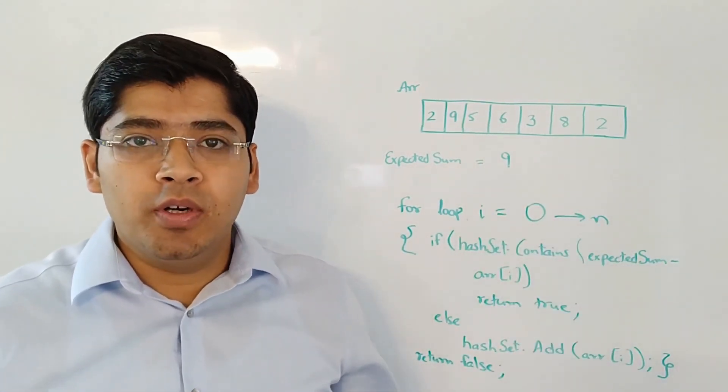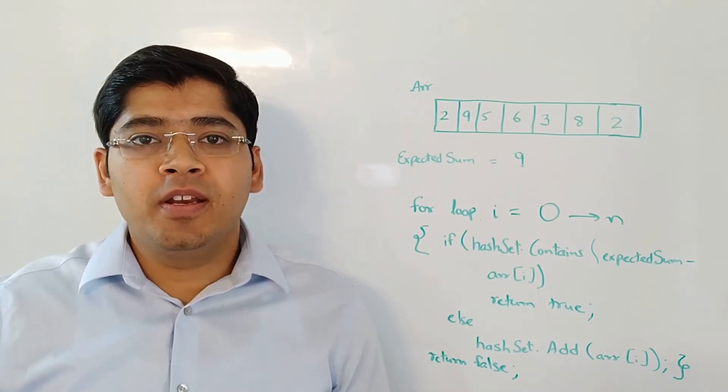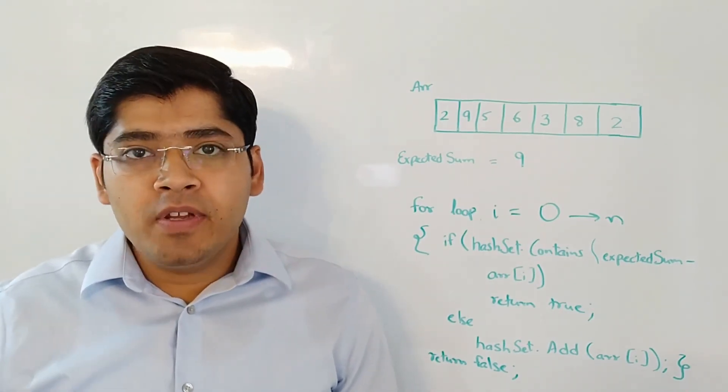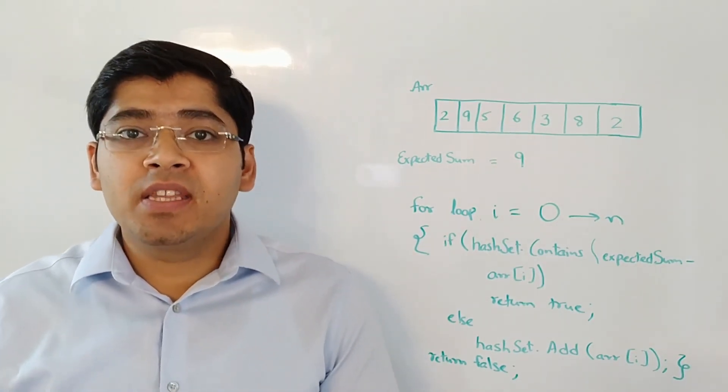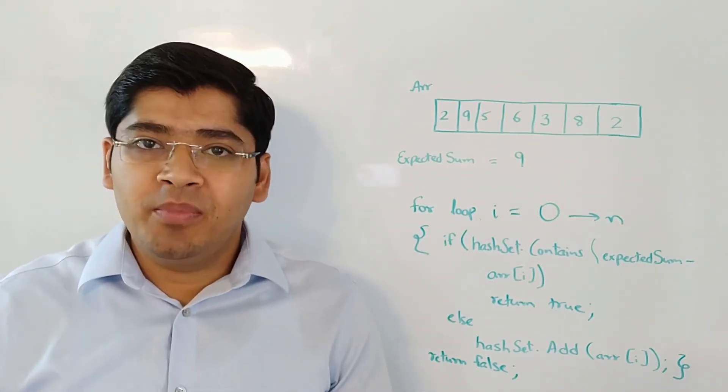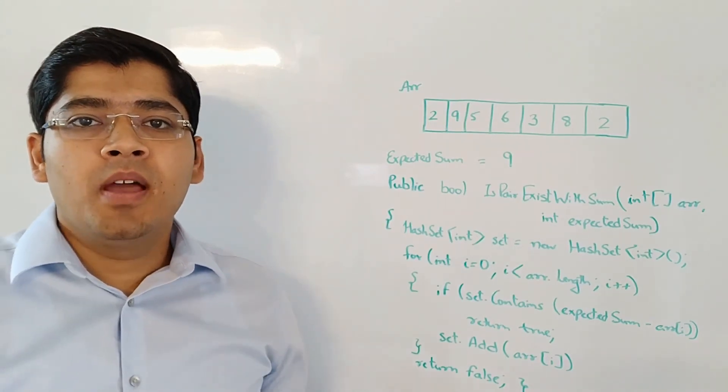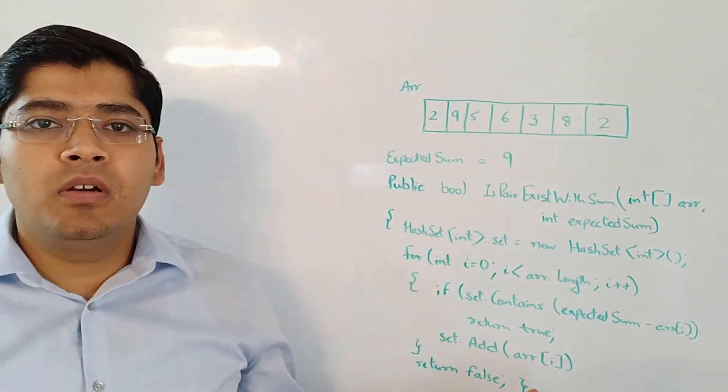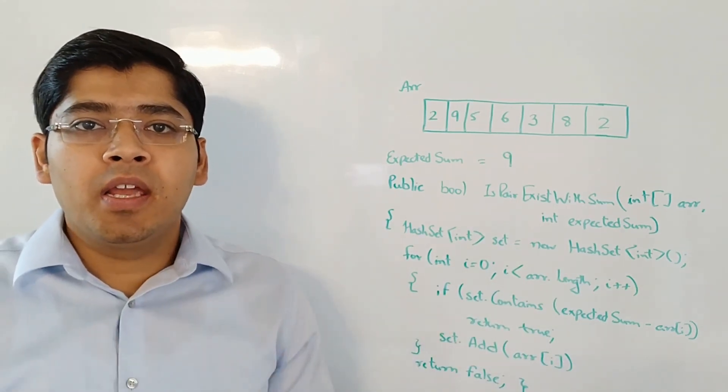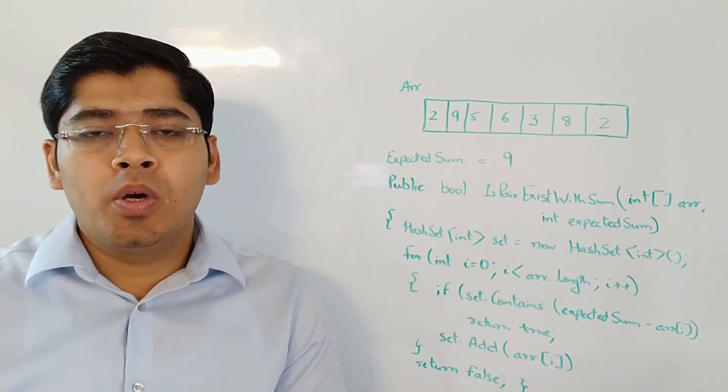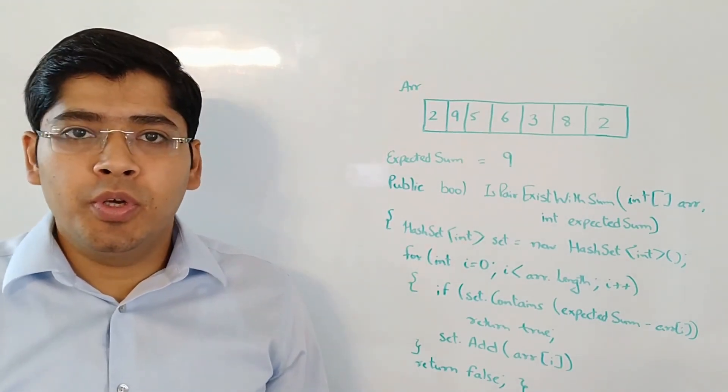So now at this point, the interviewer likes your algorithm and you have listed down all the edge cases. Now you can start writing the actual code on the whiteboard. In the interest of time, I wrote down the code myself here on the whiteboard and you will be getting a link to the actual code. So you can download it and run it in Visual Studio.